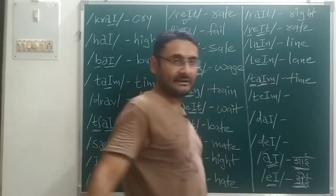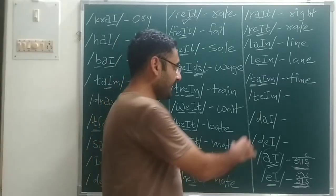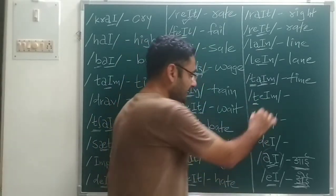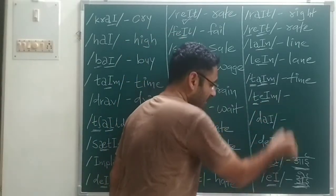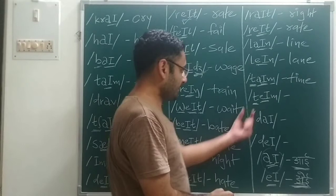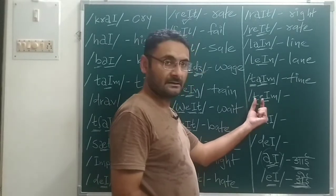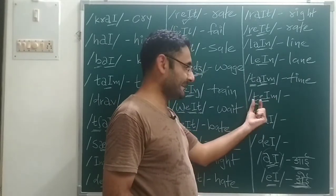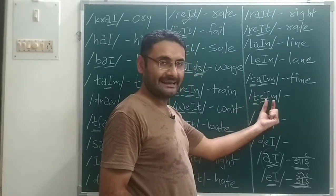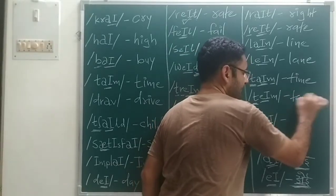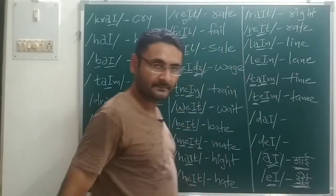Next: T sound, then E sound — T, E, M — working through: T, E, M, T, E, M — that gives us 'tame'. Simple.